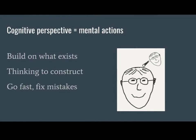Cognitive theory offers some basic assumptions about how learning happens. First, personal understanding is constructed as a combination of what is already known and new inputs. Two concepts are important here: existing knowledge and construction. Learning is far easier when new experiences can be related to what is already known.